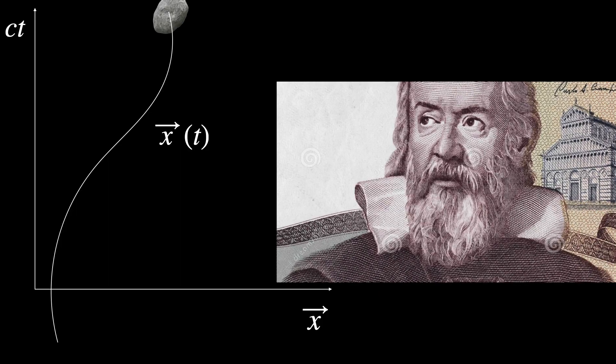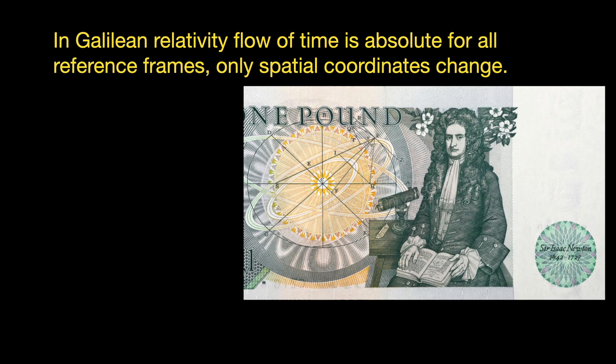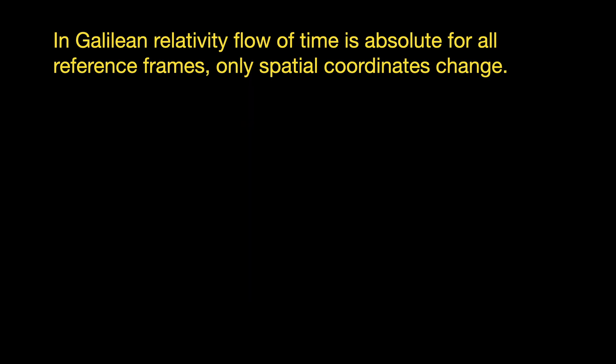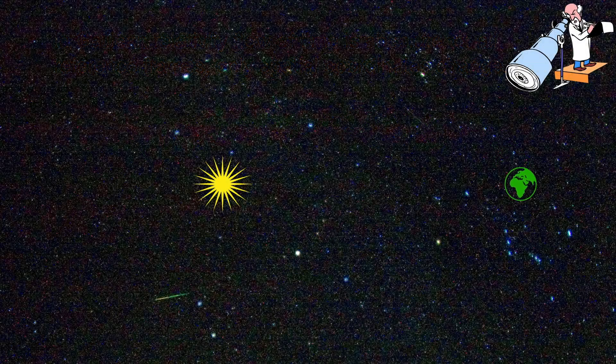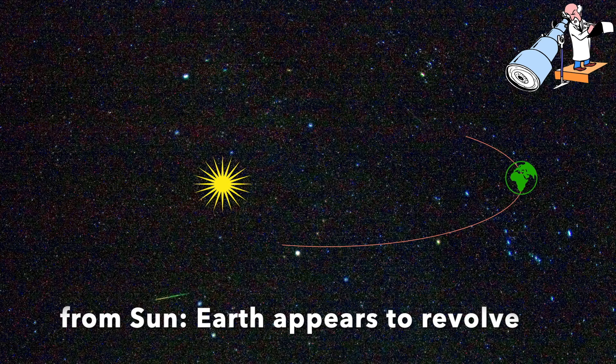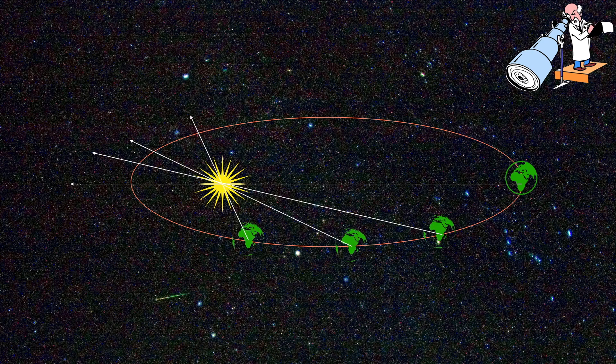In the pre-special relativistic era, time was thought to have an absolute or objective flow, same for all kinds of observers. In contrast, coordinates of an object that indicate where it is in space have always been totally subjective. They depend on who is observing, how the coordinate system has been laid, where its origin is, etc.